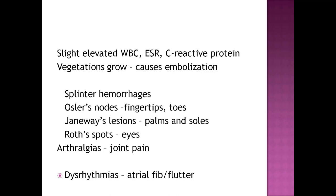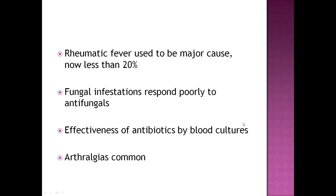When vegetation starts breaking off, that's another sign of endocarditis. Dysrhythmias — atrial fibrillation and atrial flutter — can be present due to the attack on the valves. Rheumatic fever used to be the major cause but is now less than 20%. Fungal infestations respond poorly to antifungal medications, so patients with a fungal valve infection will be on antifungals for months.